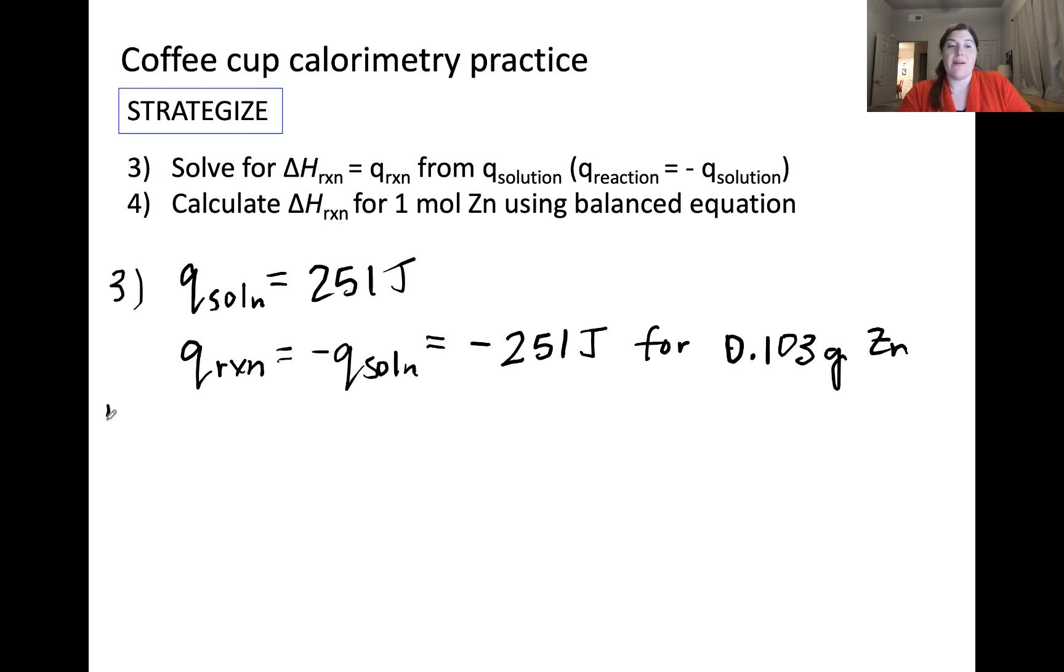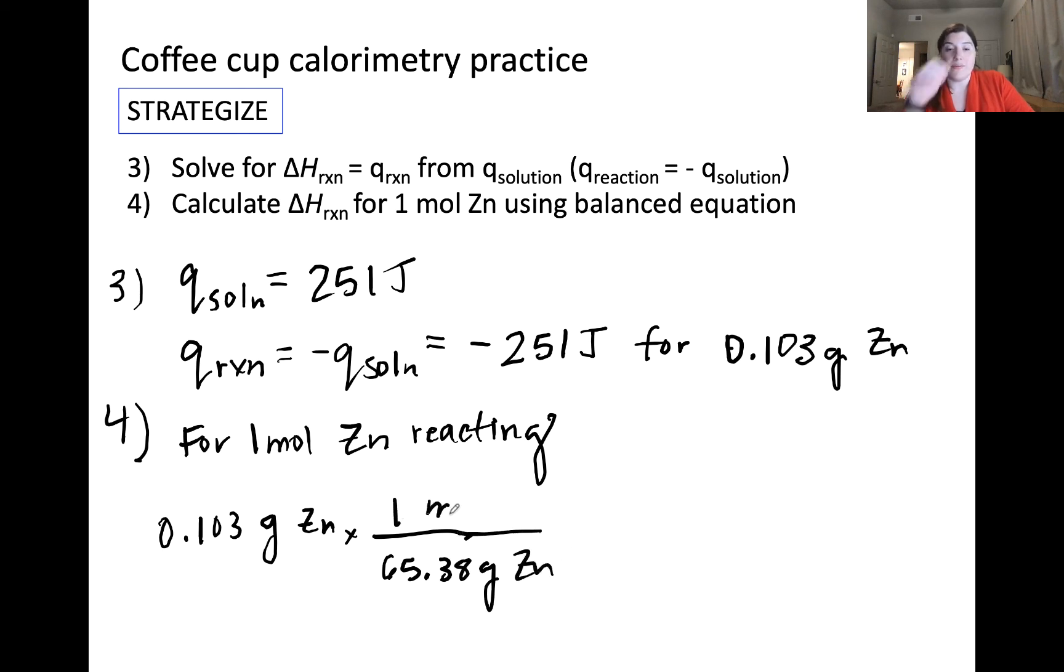In step four, we need to calculate delta H of reaction for one mole of zinc reacting. Let's figure out how many moles we had of zinc in our 0.103 grams. We can do that using the molar mass of zinc, which is 65.38 grams per mole. I got that from the periodic table. I calculated that this is equal to 1.58 times 10 to the negative third moles of zinc. This means we have much less than one mole of zinc, as shown in the balanced reaction.